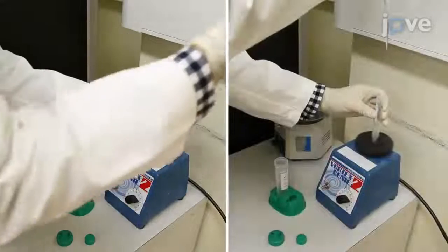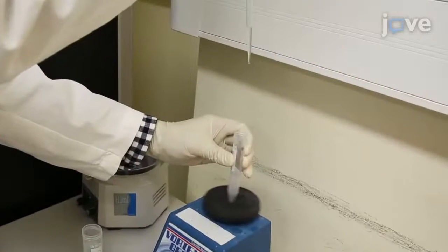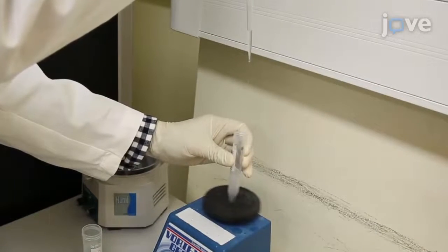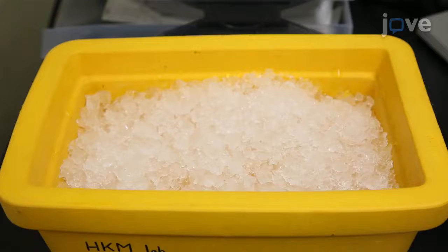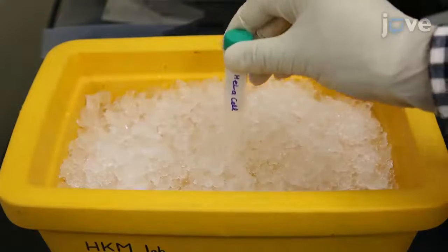After the second wash, replace the supernatant with 1 mL of 95% ethanol and mix the pellet by vortexing. Then place the fixed cells on ice.